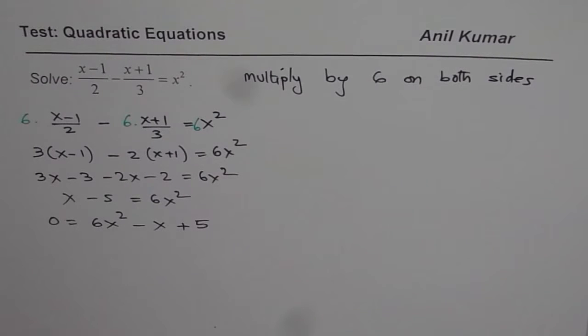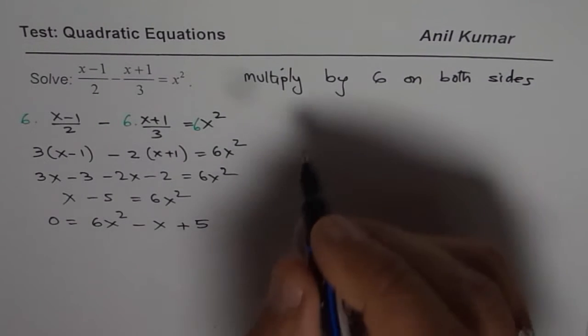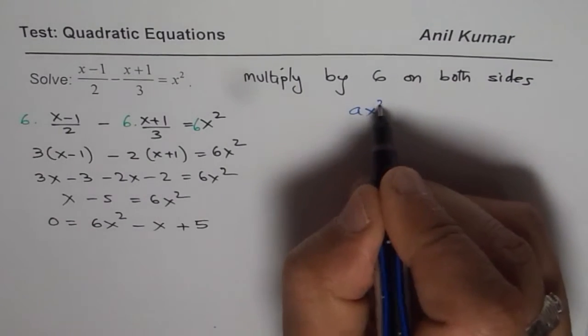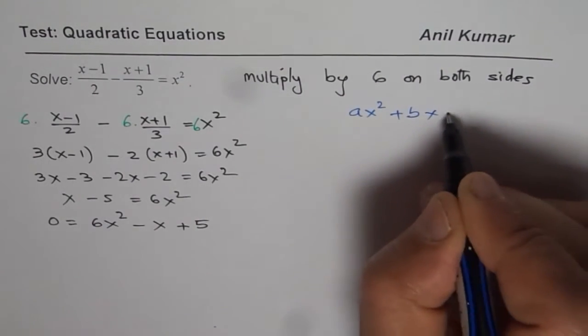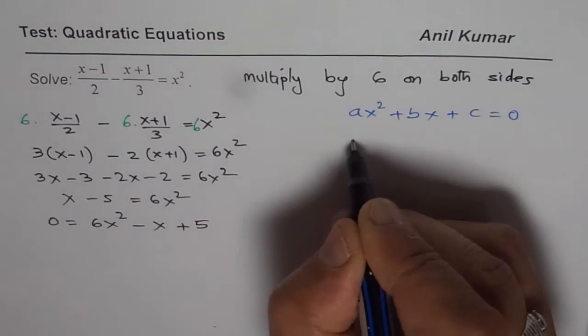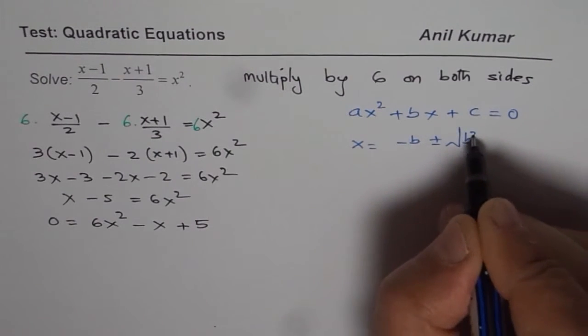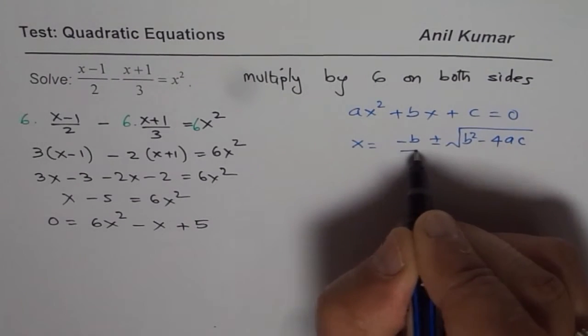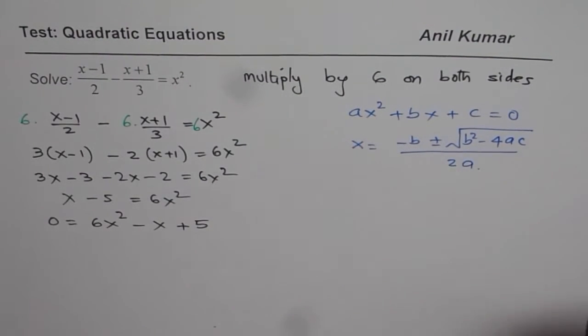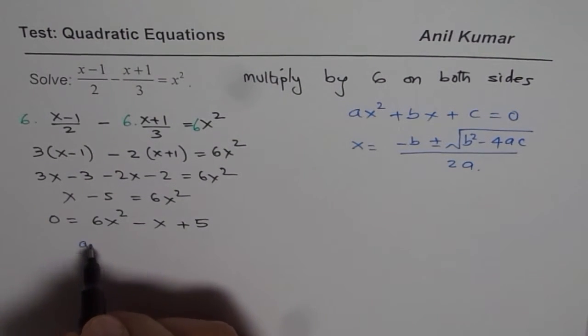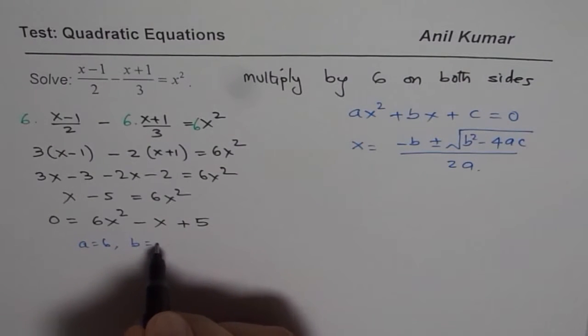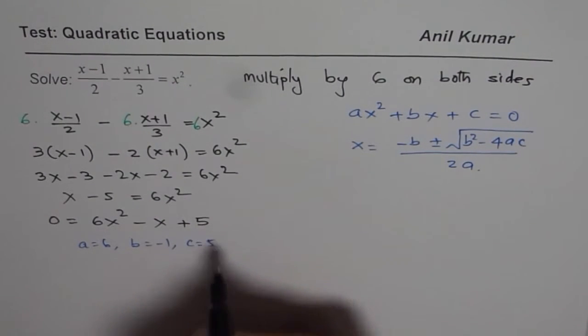I hope you remember the quadratic formula: if the equation is given in the form ax² + bx + c = 0, x could be written as (-b ± √(b² - 4ac))/(2a). In our case, a is 6, b is -1, and c equals 5.